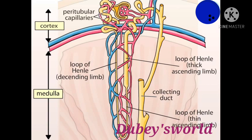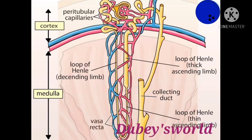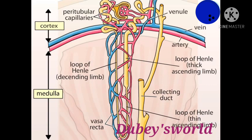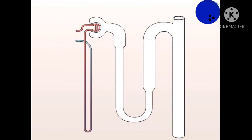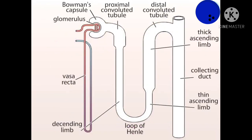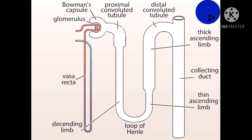A few peritubular capillaries run into the medulla in parallel with the loop of Henle and the collecting duct and form the vasa recta. These capillaries carry away the molecules that are reabsorbed from the tubules. All of the peritubular capillaries join back together into a venule that eventually leads to the renal vein. Nephrons regulate the composition of blood and urine by a combination of filtration, secretion, and reabsorption. Viewed schematically, we will see how these processes are facilitated by the regular arrangement of segments of the nephron.